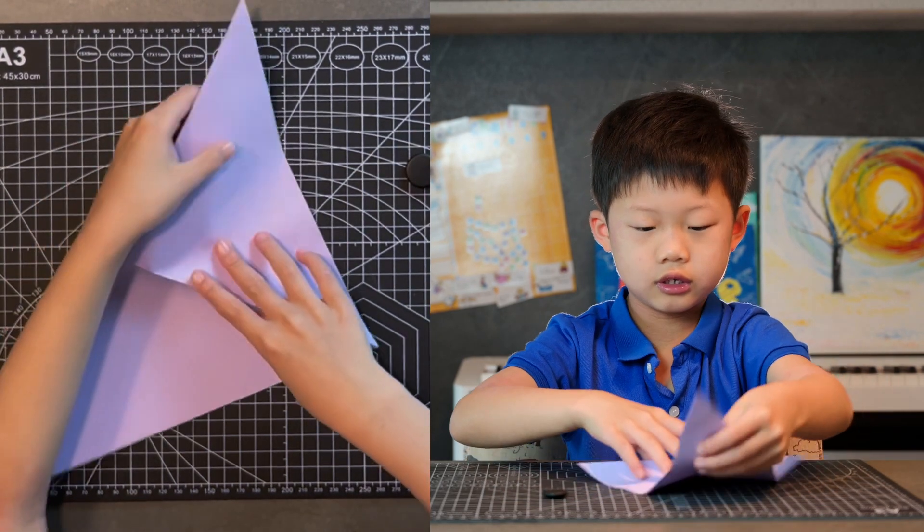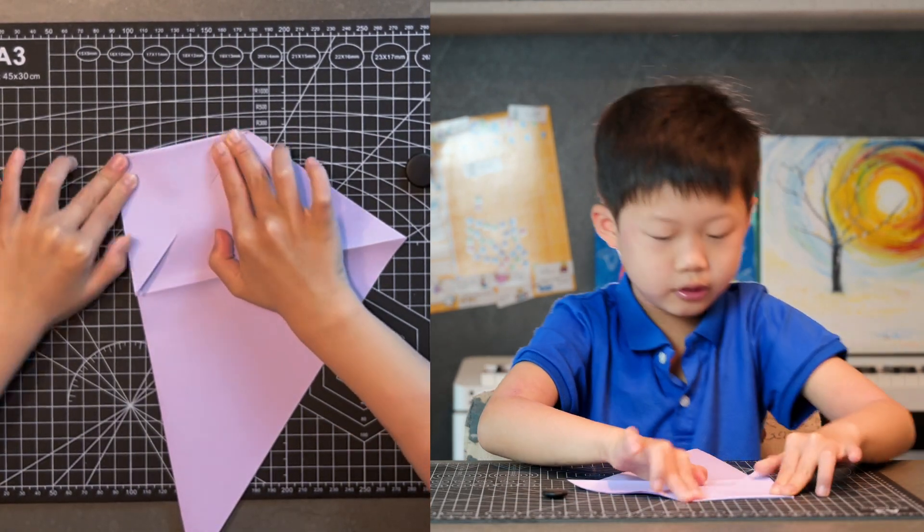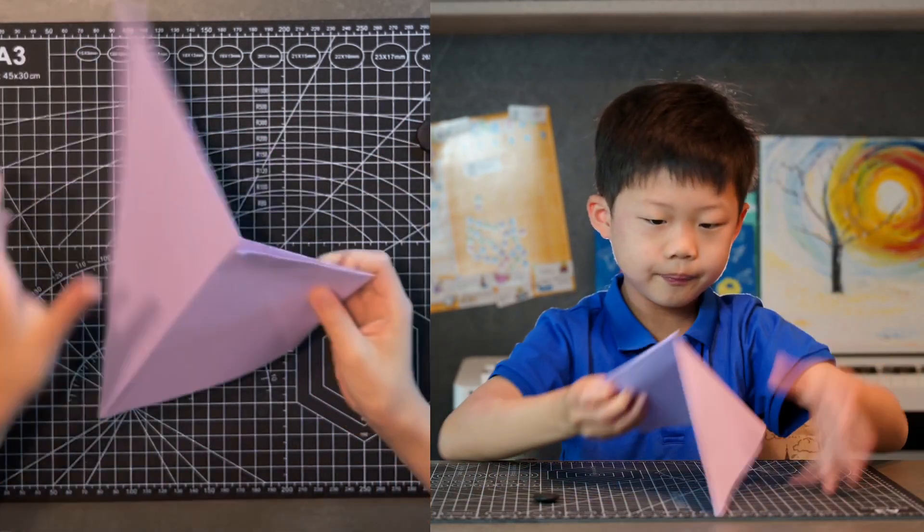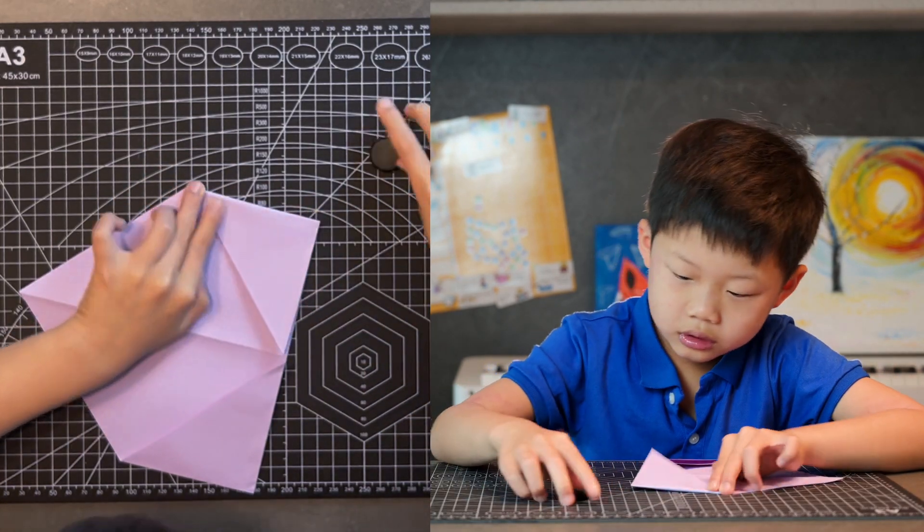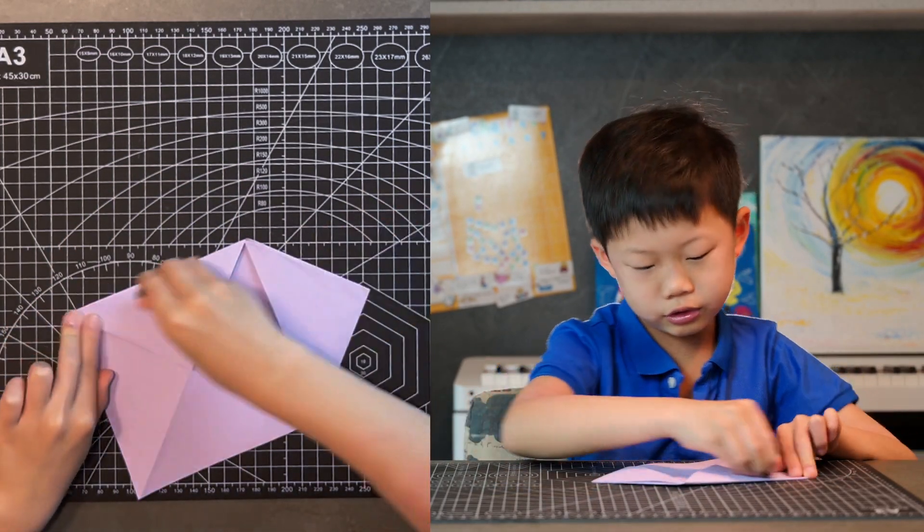Put your side into your center. Get your seam on your other side. And then fold the top edge into your center.